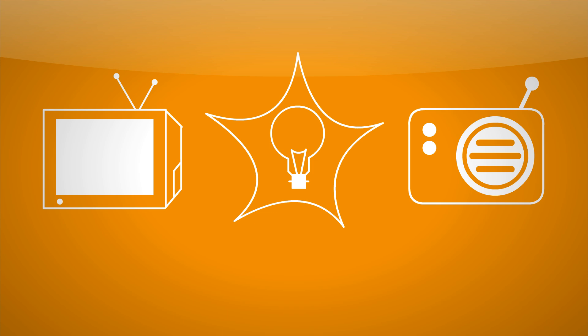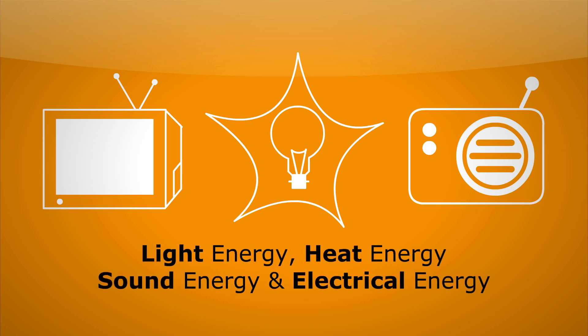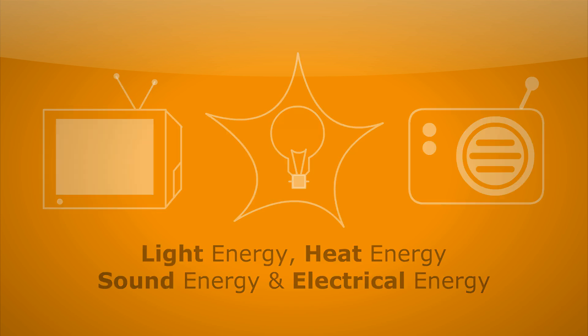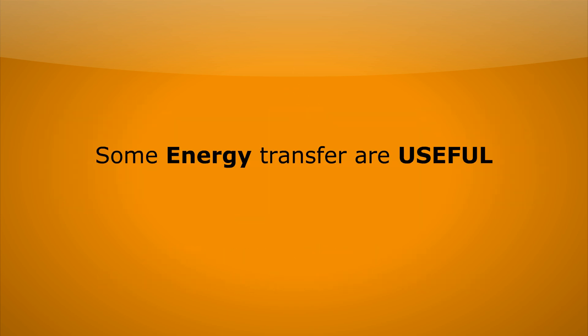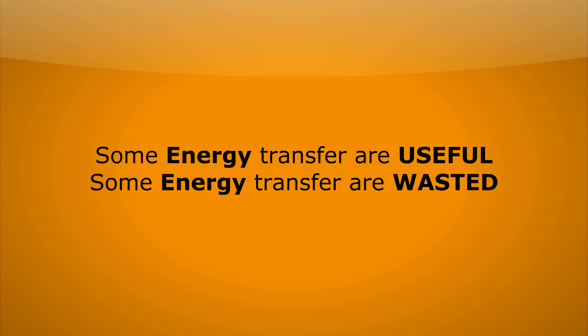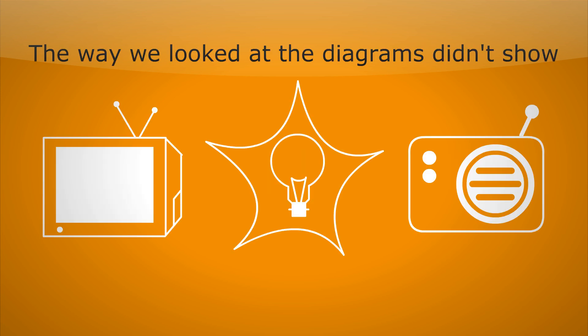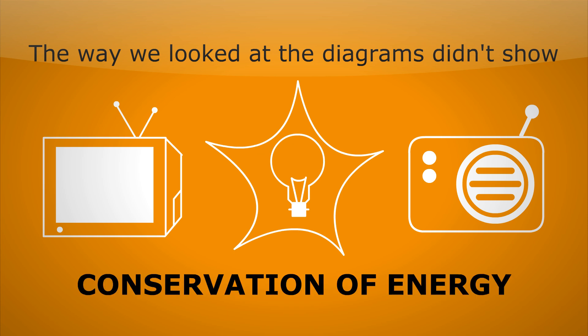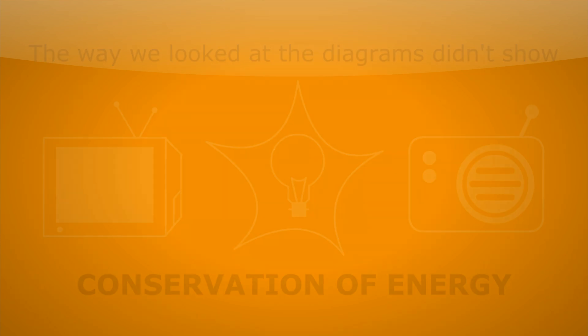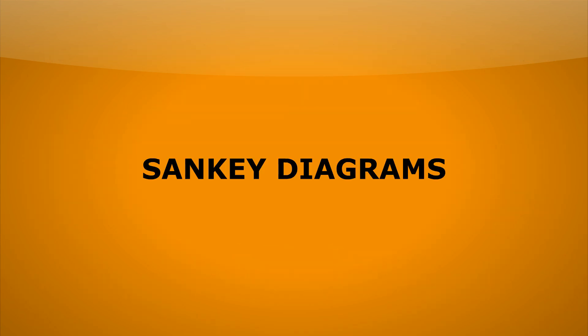Now we've looked at some simple devices and we can spot what energy transfers are taking place. However, the diagrams we've looked at are a bit simple — in all the examples, some energy transfers were useful, we wanted them, and some were wasted, we didn't want them. And it wasn't always obvious which was which. Also, the way we looked at the diagrams didn't really show the conservation of energy. What we need is a diagram that shows all of this, and we actually do have it — we call it a Sankey diagram.